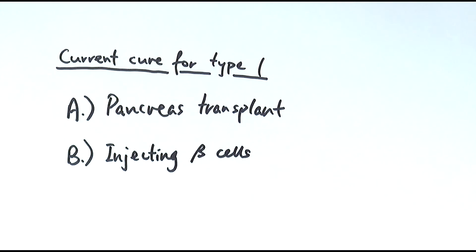Another possibility is to inject beta cells, but there is a low success rate so far on that treatment because it's harder to actually inject new cells into the pancreas as a regular treatment. As you can see, there are lots of problems with current treatments.